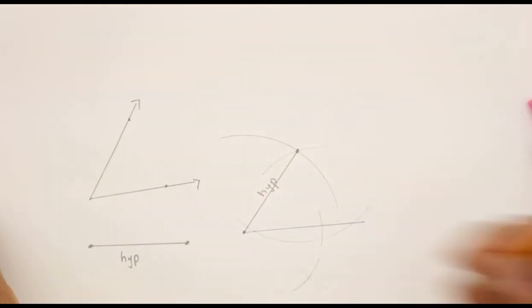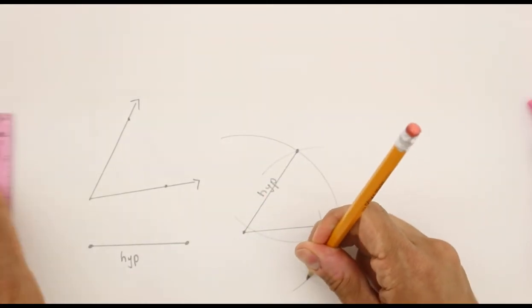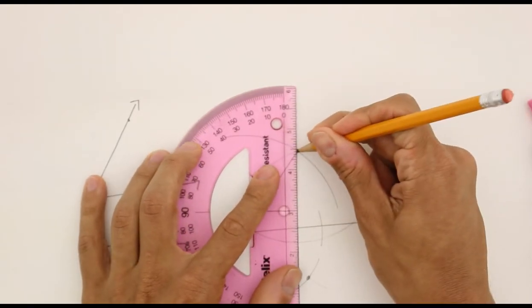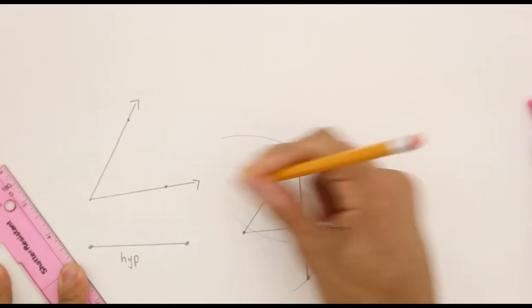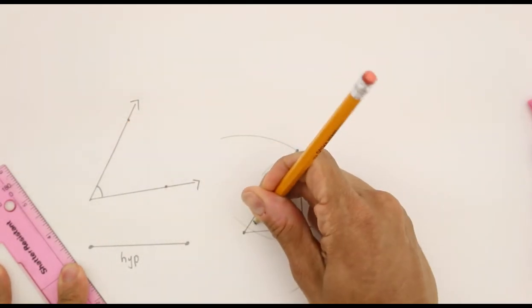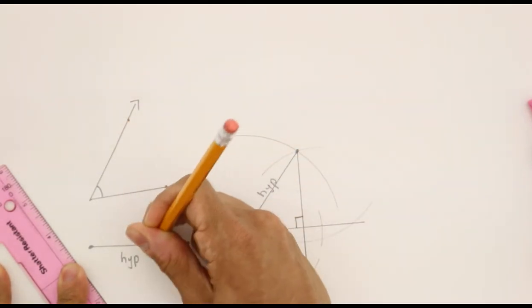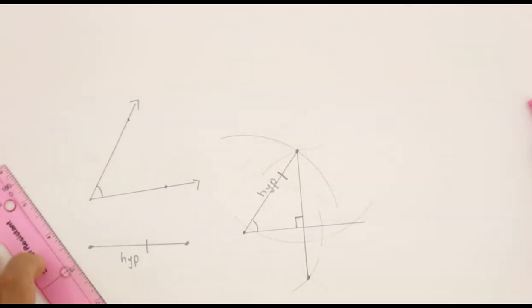And from the intersection of those two arcs, I can make a point that connects to my top point. And these two points intersecting with the original segment create a right angle. Thus, I have a right angle triangle with the given angle size and the given hypotenuse.